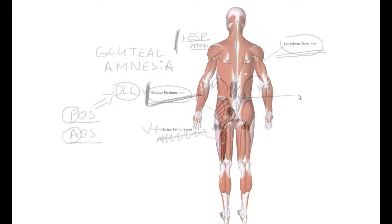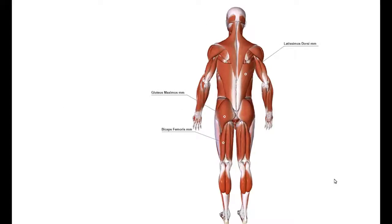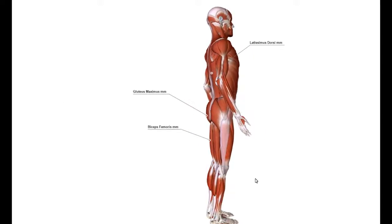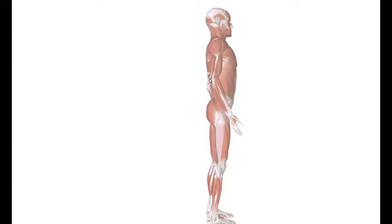Problem in this region is that we will actually lose power. If biceps femoris becomes main hip extensor, we are not using gluteus maximus to its full potential. Tight lower back muscles are never desirable. Tight lower back muscles will contribute to hyperlordotic lower back. Talking perfect posture, increased lordotic curve is not desirable.